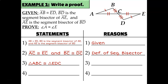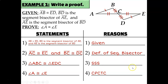So triangle ABC is congruent to triangle EDC because of the side-side-side triangle congruence theorem. What we've done so far is like the previous lesson — we were given information and proved the triangles congruent. But today we take it one step further: since the triangles are congruent, angle A and angle E are corresponding angles — both are the first letters in each triangle's name — so angle A is congruent to angle E by CPCTC.